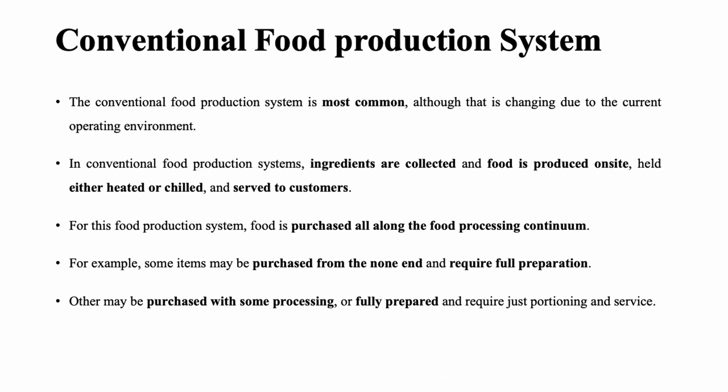For this food production system, food is purchased all along the food processing continuum. For example, some items may be purchased raw and require full preparation, while others may be purchased with some processing or fully prepared and require just portioning and service.